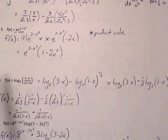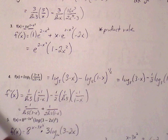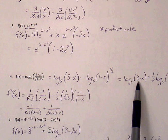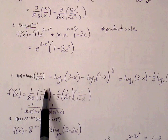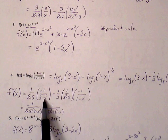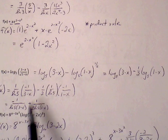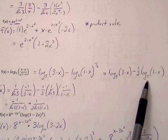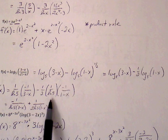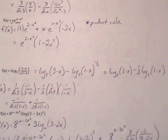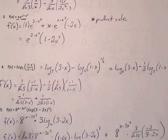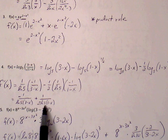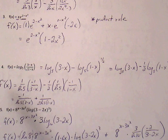So 1 over ln of 5 times the derivative of 3 minus x — u prime, the derivative of 3 minus x is negative 1 — all over 3 minus x, minus the coefficient 1/2 times 1 over natural log of 5, times negative 1 over 1 minus x. Cleaning up: we get negative 1 over ln of 5 times 3 minus x, plus 1 over 2 ln of 5 times 1 minus x.